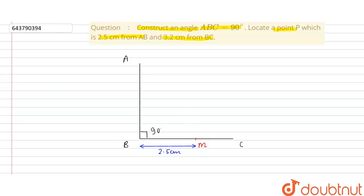And another point which is given, the condition is 3.2 centimeter from BC. So 3.2 centimeter from BC and on the AB. So on the line AB another point, let's say this is point N which is given distance is 3.2 centimeter.